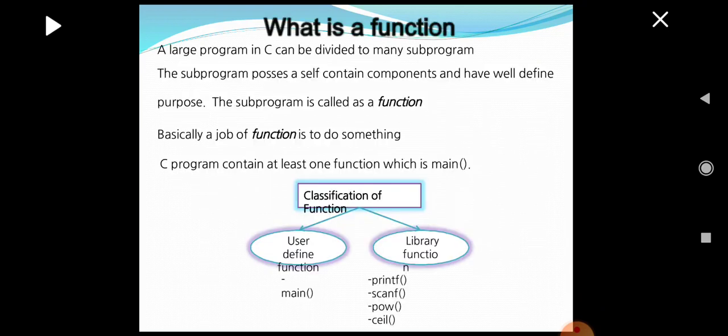In this presentation, we will see what is the meaning of function. A large program in C can be divided into so many sub-programs. The sub-programs possess self-contained components and have a well-defined purpose. These sub-programs are called functions. Basically, the job of the function is to complete a task. A C program contains at least one function, which is called the main function.